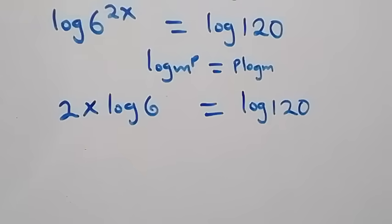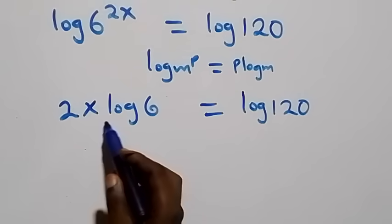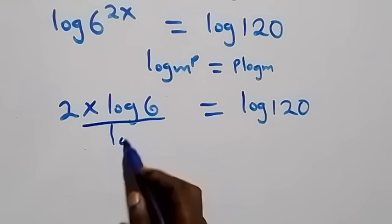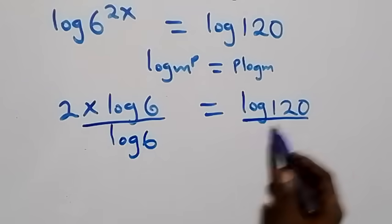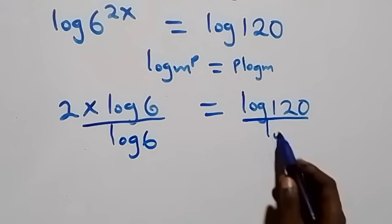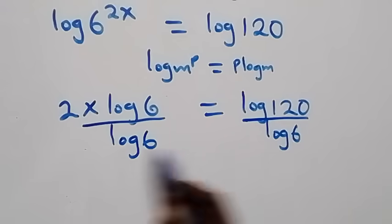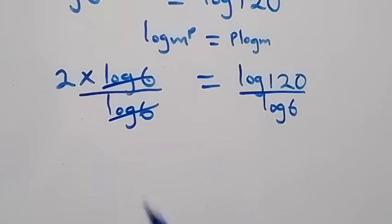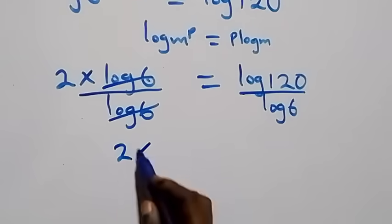The next step is to divide both sides by log 6. We divide this side by log 6 and also divide the other side by log 6. The log 6 terms cancel each other, and we have 2x left, equals log 120 over log 6.